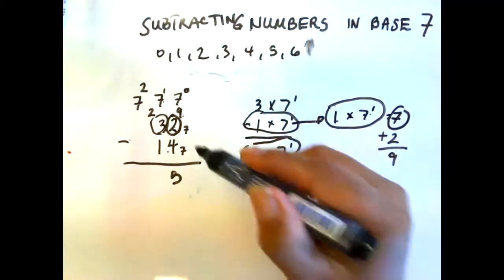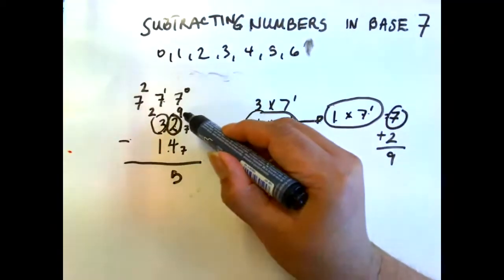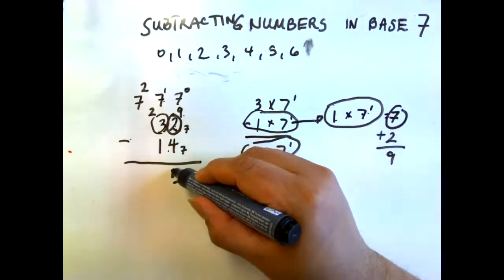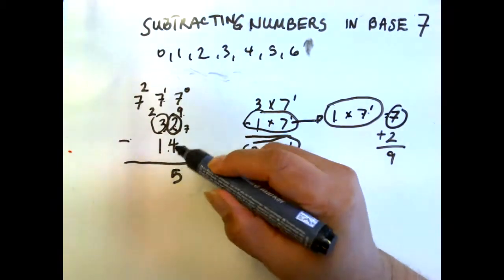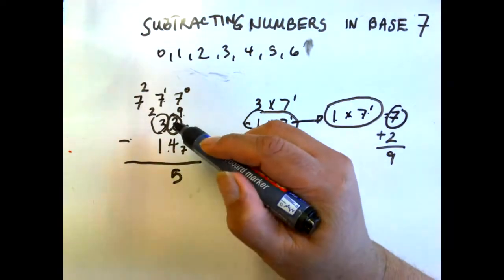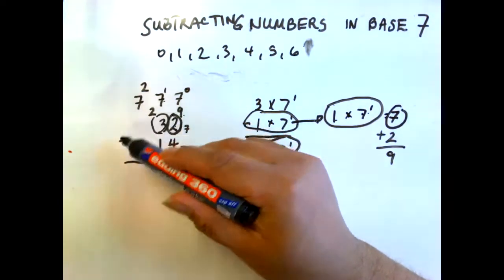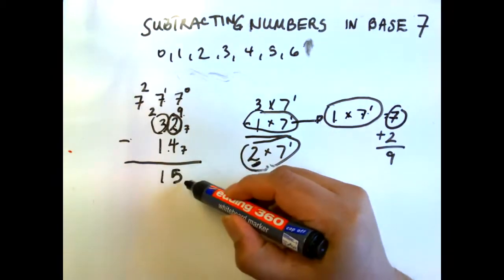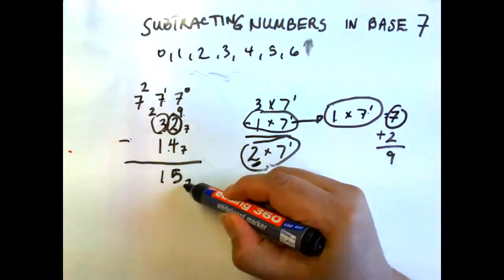Now we can do our subtraction: nine less four is five. Then two less one is one. So the answer is 1, 5 in base 7.